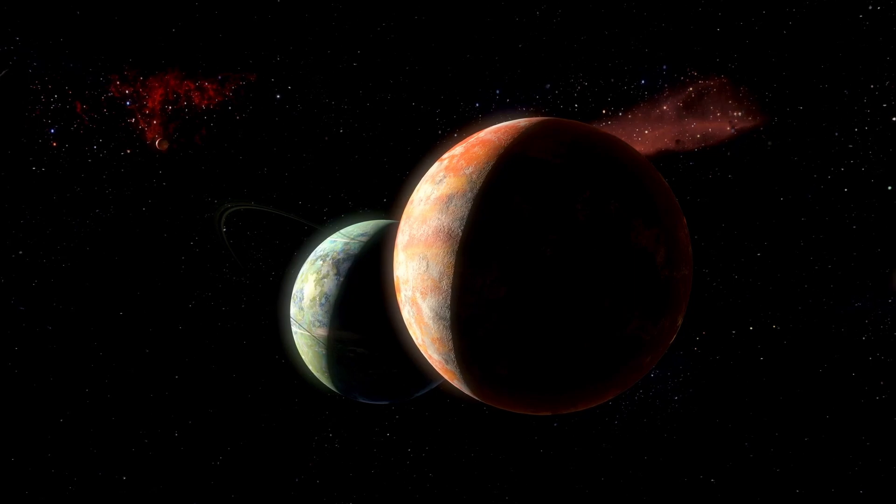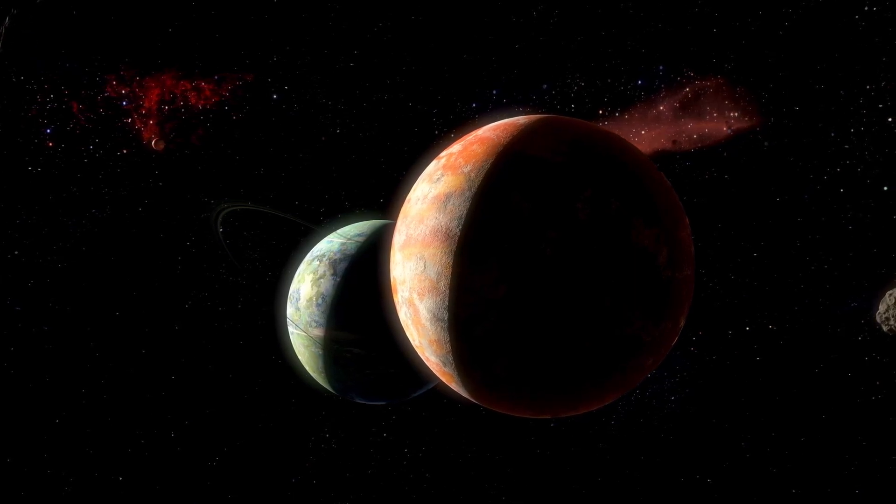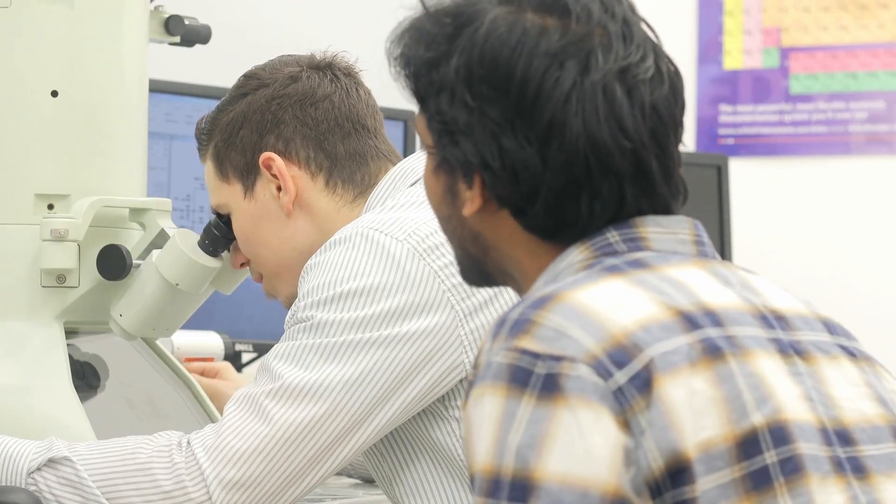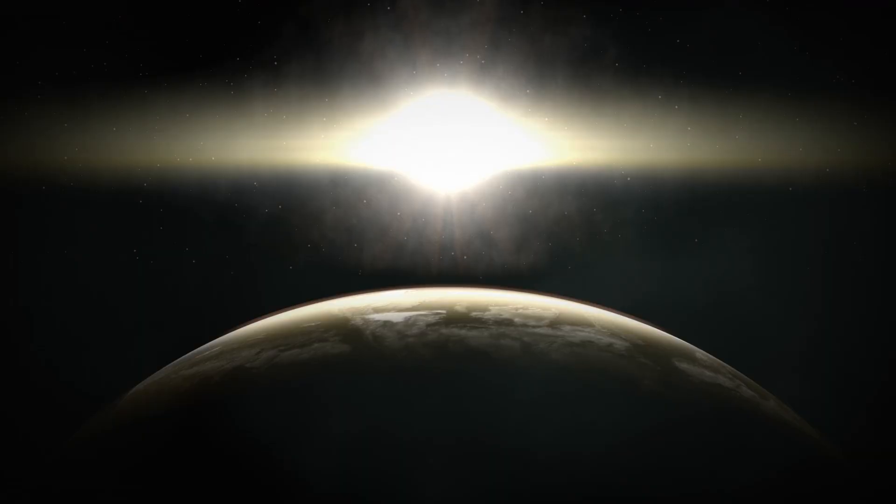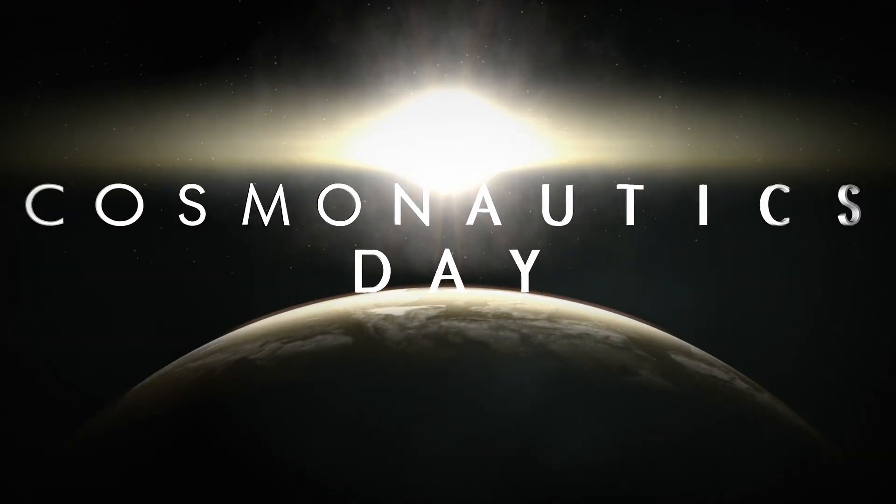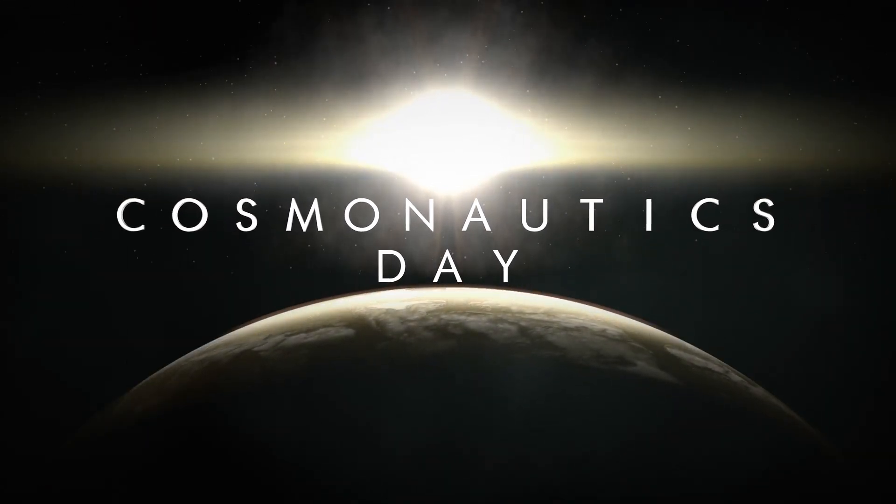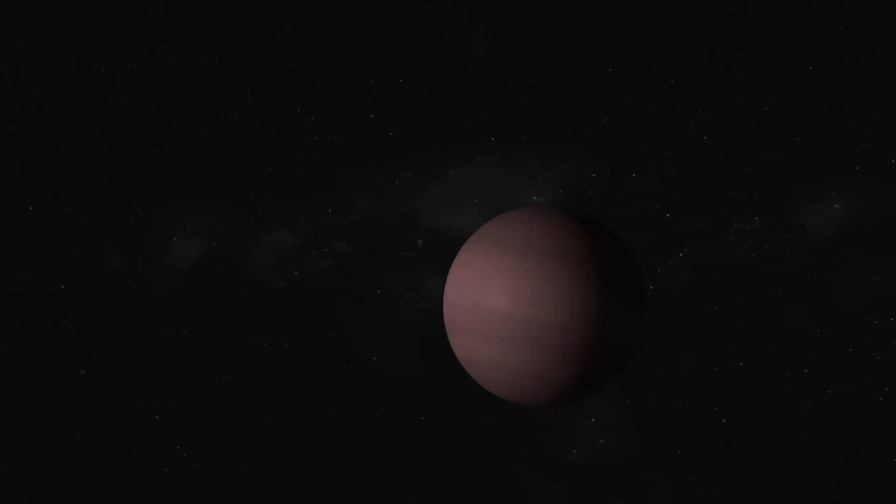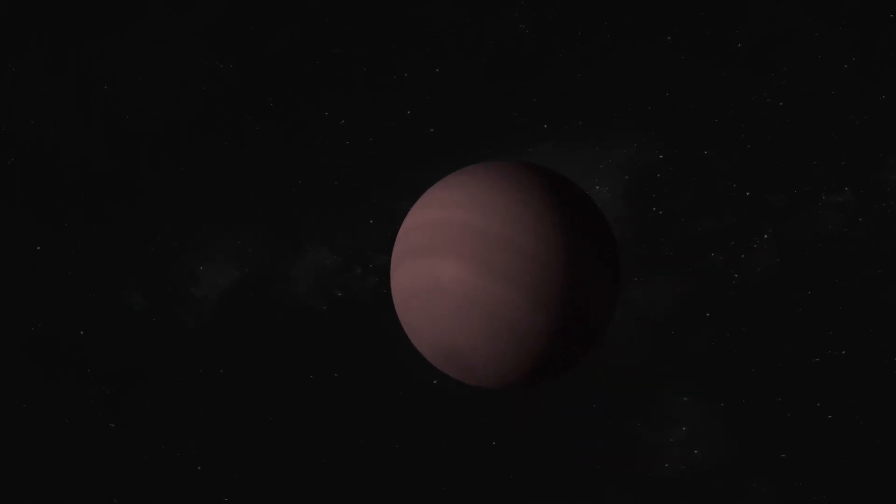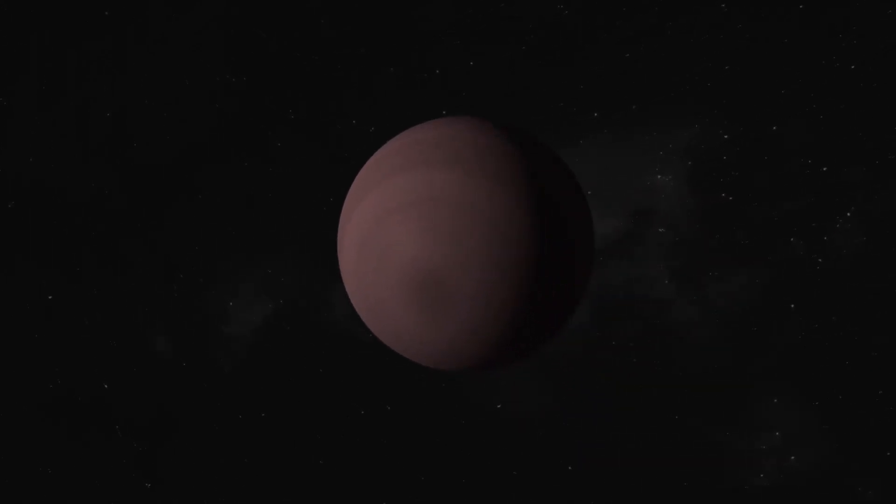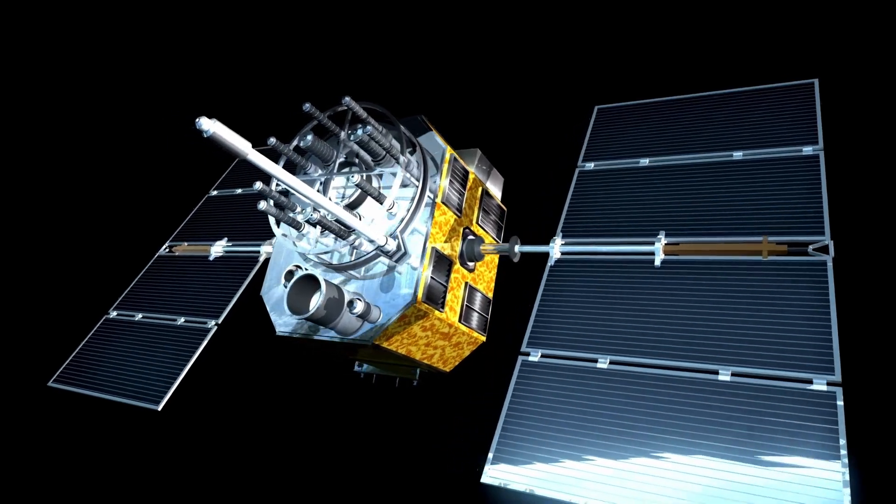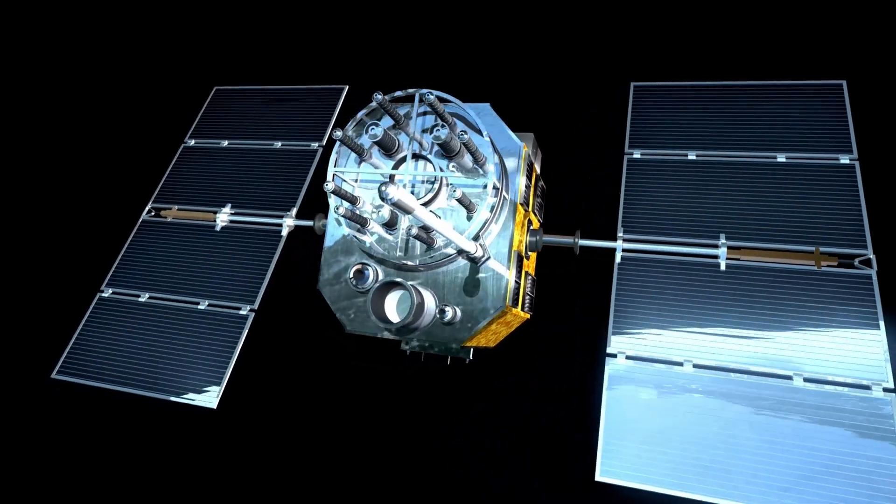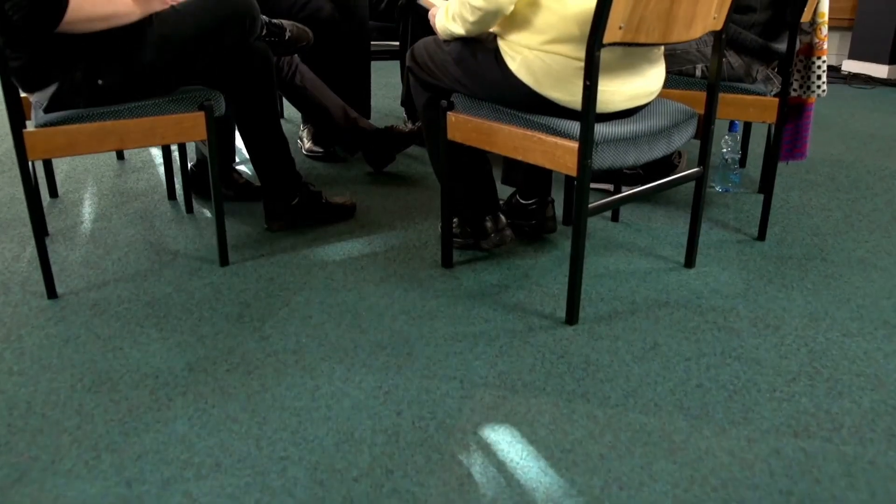Alpha Centauri A and B form a binary system known as Alpha Centauri AB. These G and K-type stars appear as a single bright point in the Centaurus constellation, ranking as the third brightest object in our night sky with a peak brightness just under magnitude -0.27. Proxima Centauri, also known as Alpha Centauri C, is a red dwarf and M-type star.